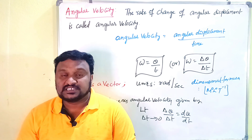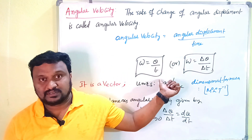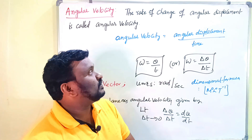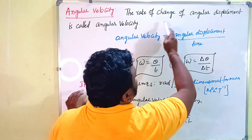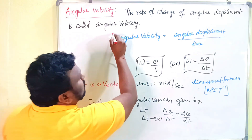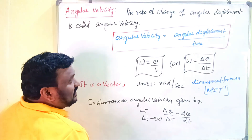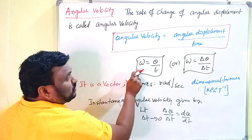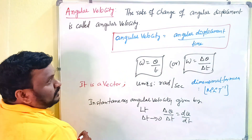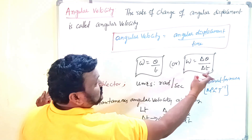If angular displacement is theta and time is t, then we write: omega equals theta by t. So angular velocity equals angular displacement divided by time. We can also write this as omega equals delta theta by delta t.